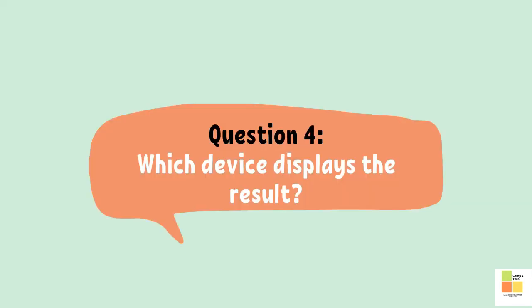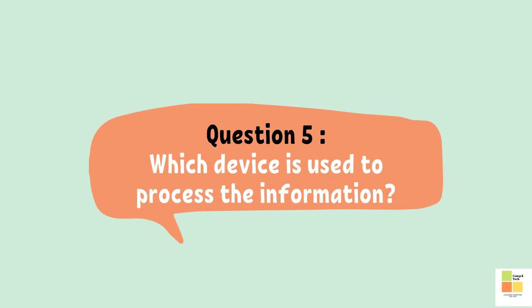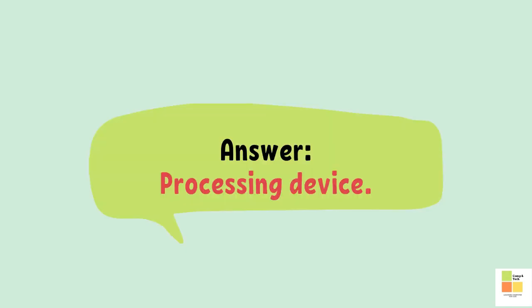Question number four: which device displays the result? Answer: output device. Question number five: which device is used to process the information? Answer: processing device.